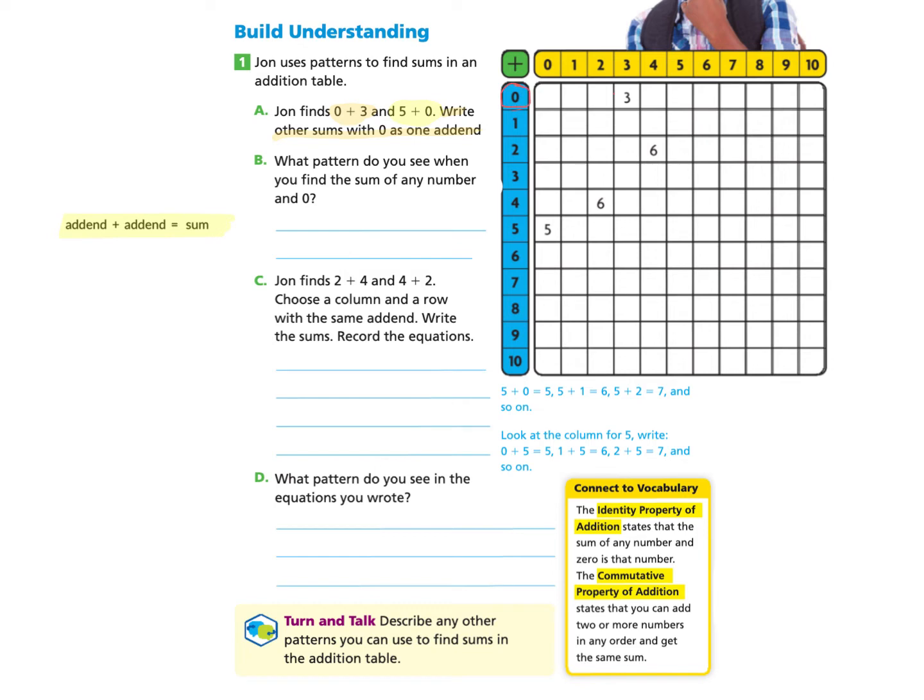This means we are going to go through each number and say 0 plus 0 and write the answer, which would be 0. We're going to say 0 plus 1 and write the answer, which is 1. If you'd like to pause and complete just writing the sums for 0 on this chart, you may do so or just follow along with me. So we'll continue on 0 plus 2 is going to give us 2.